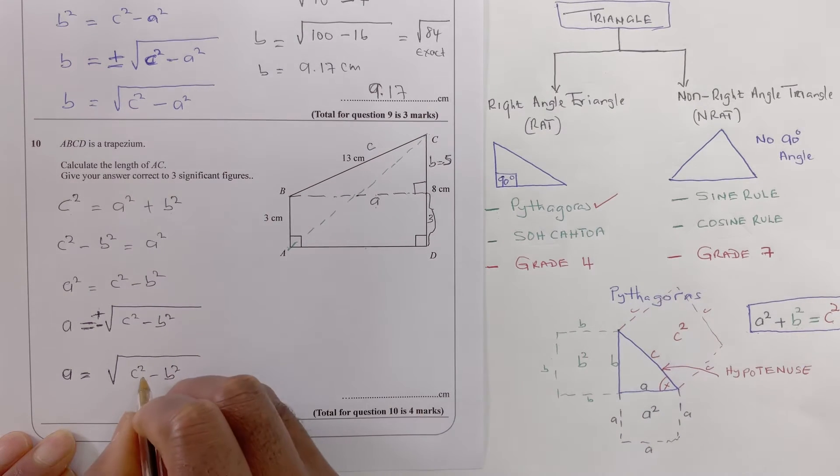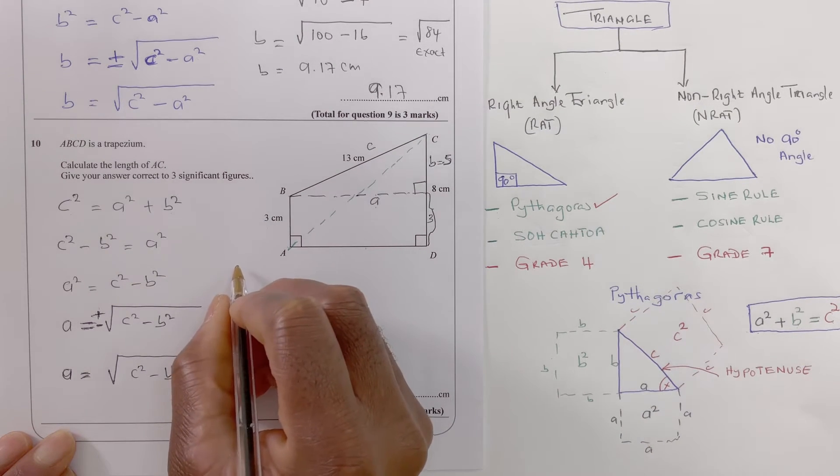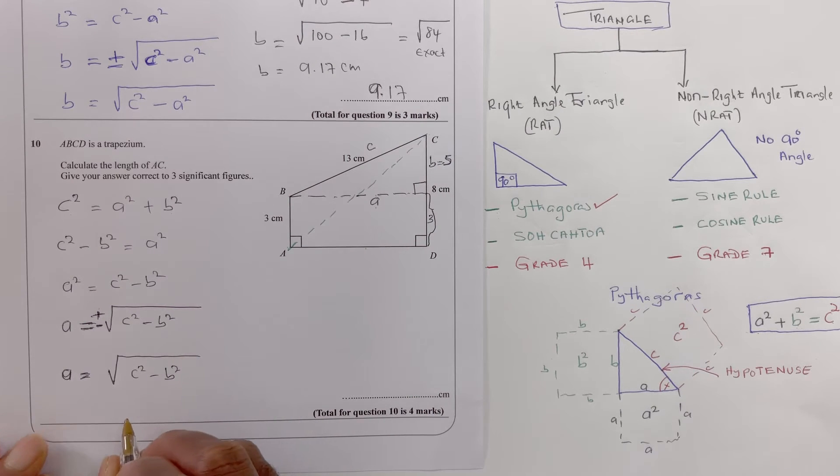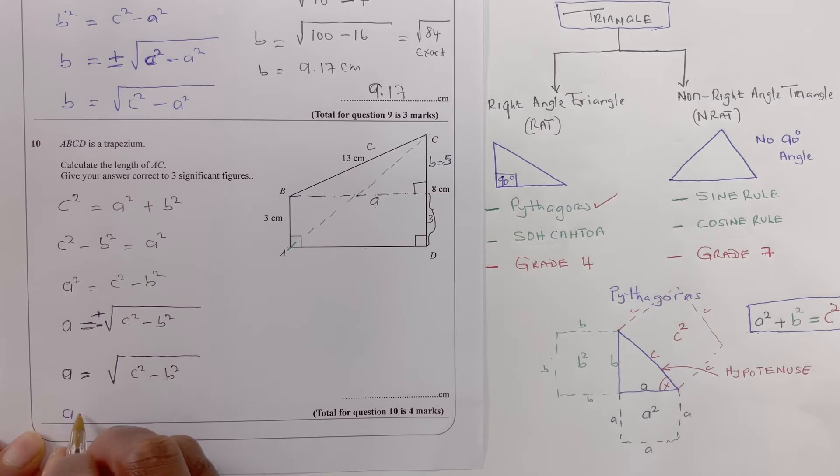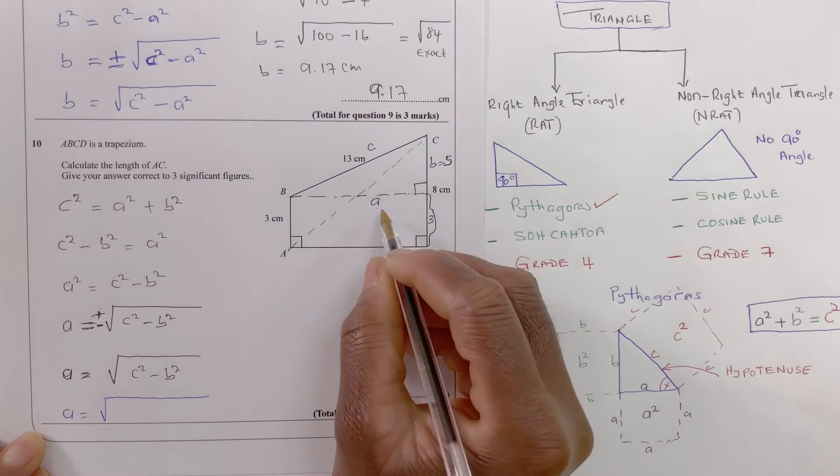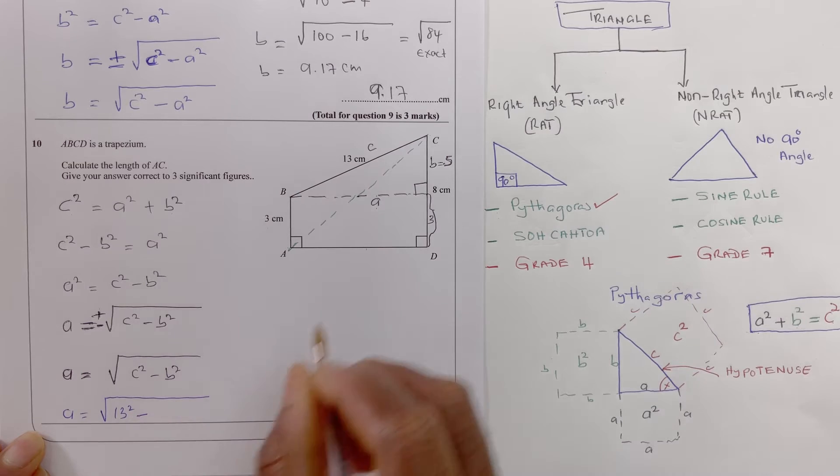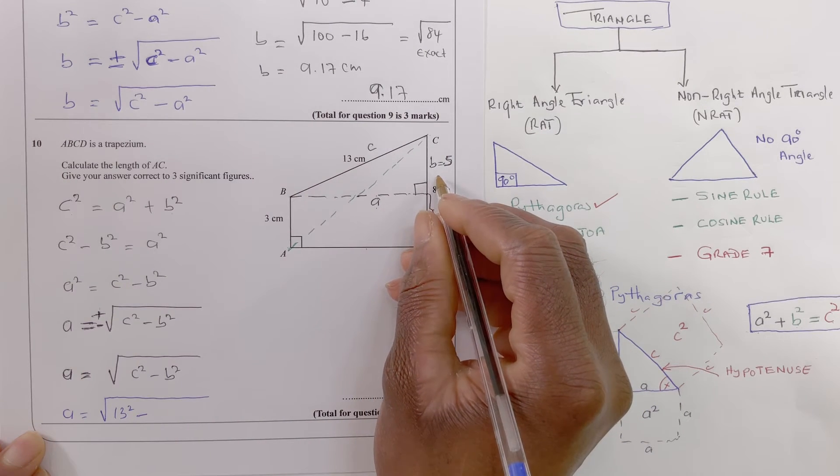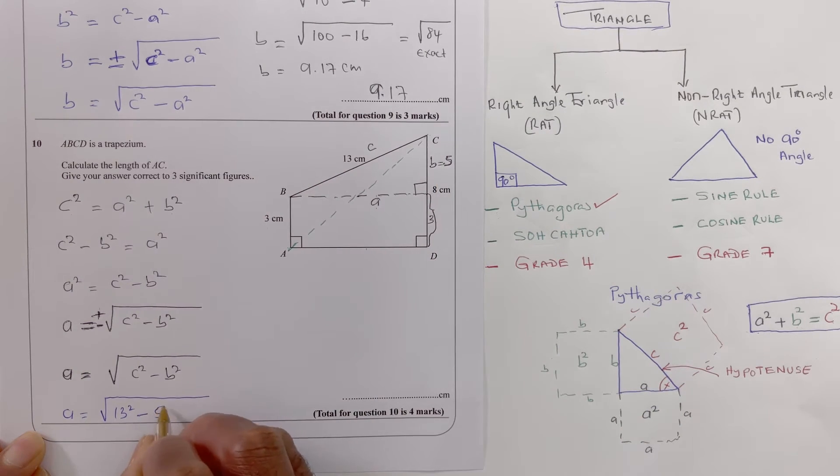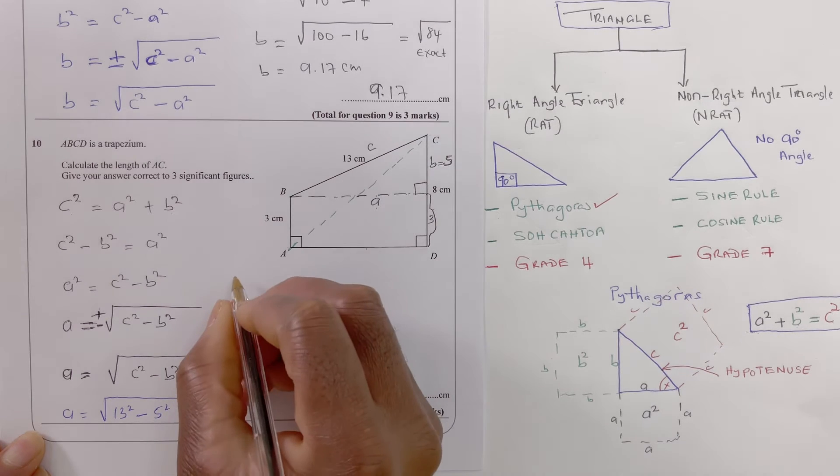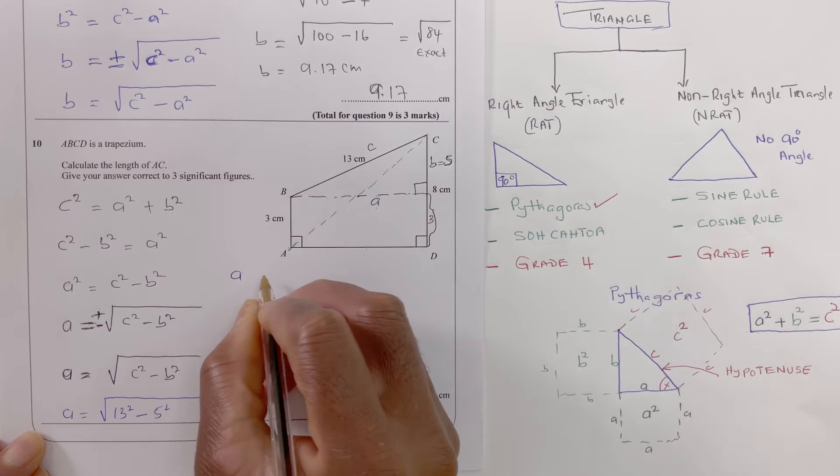So if I put that in there, the value for a, so that would be a equals root c is 13 so that's 13 squared minus b is 5 so that's 5 squared.